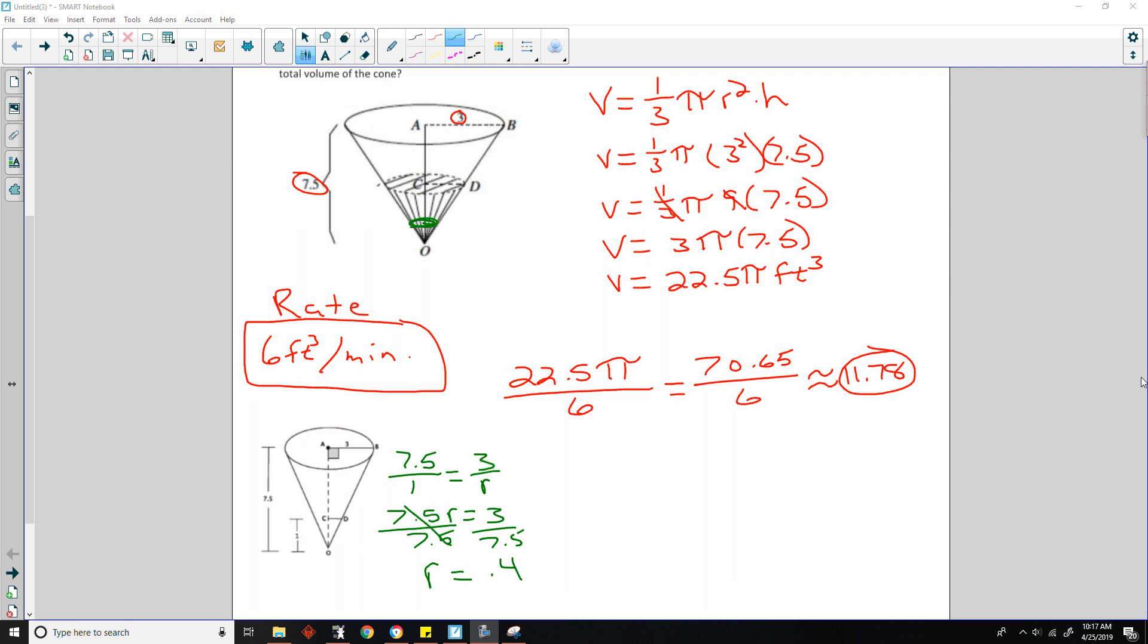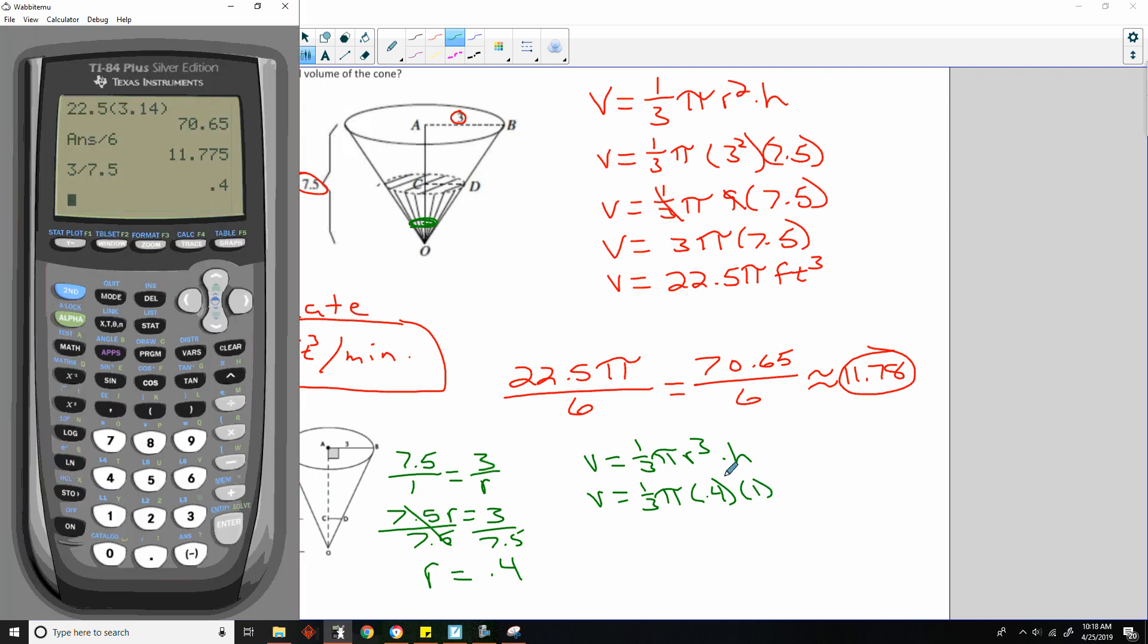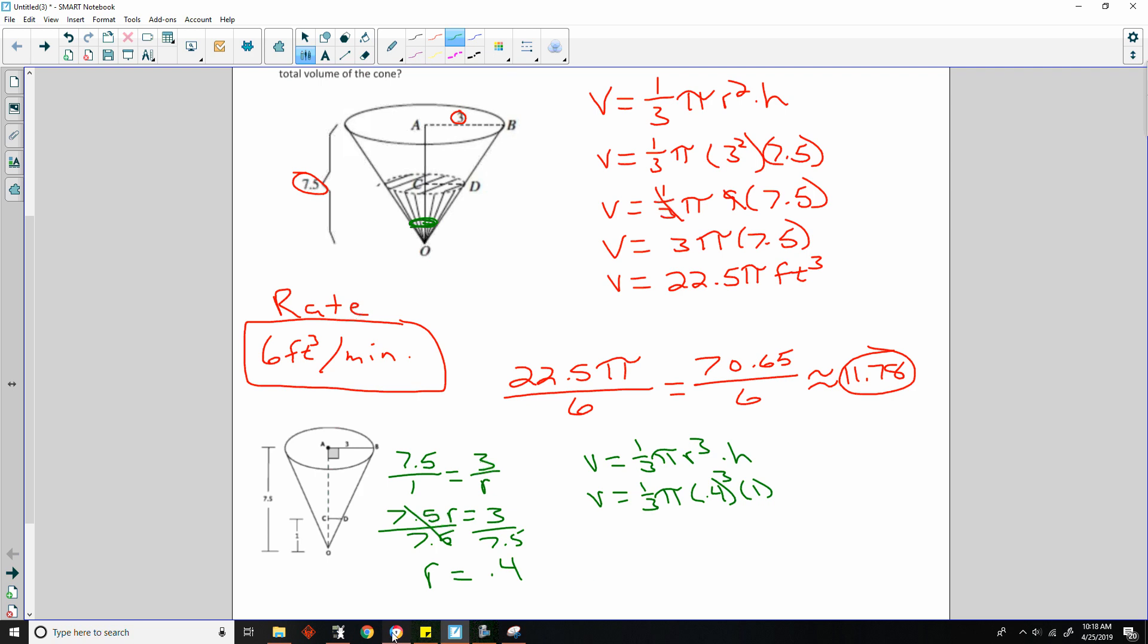So now we need to do the volume of the cone for one foot. Volume equals 1 third pi R cubed times height. Volume equals 1 third pi. The radius was 0.4 times the height, which is 1. And I want to know what 0.4 cubed is. Oh, it's squared. That's right. Pi R squared times height. Whoa. That would have been a disaster. Let me fix that. 1 third pi R squared times height.